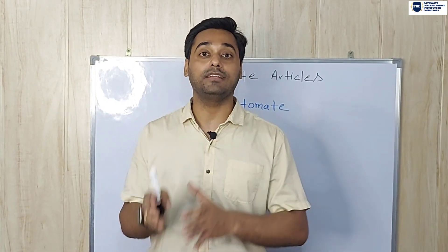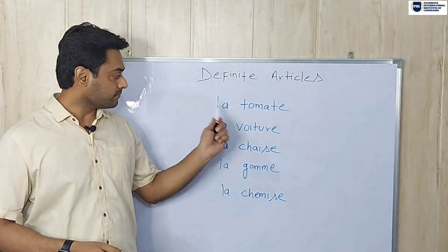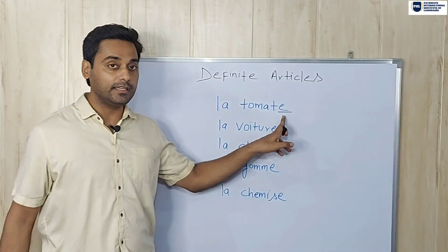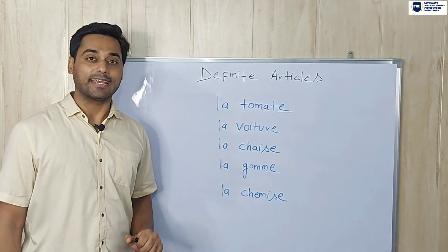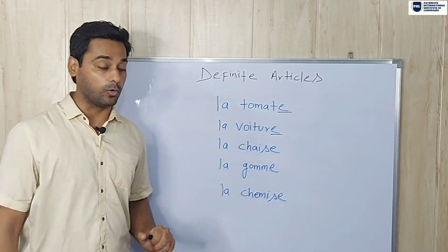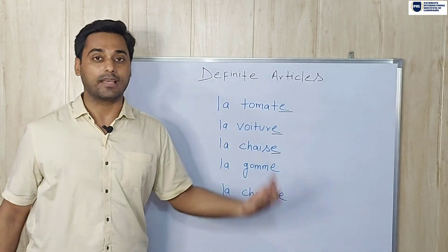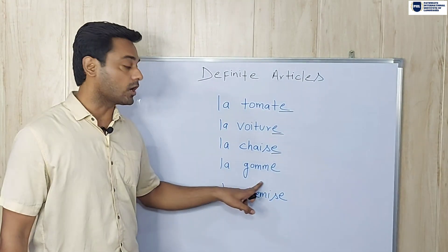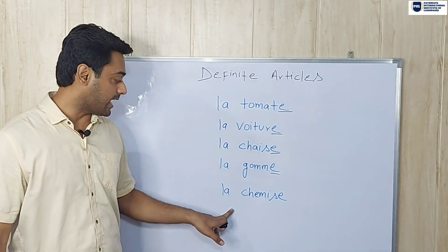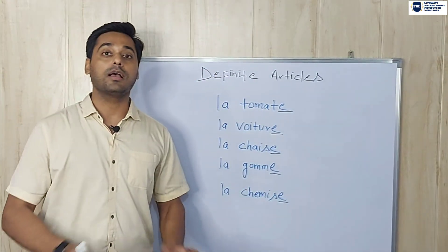For example, if any noun ends with 'e', we consider it feminine. Look at these words: 'la tomate' (the tomato) — ends with 'e', feminine. 'La voiture' (the car) — ends with 'e', feminine. 'La chaise' (the chair) — ends with 'e', feminine. 'La gomme' (the eraser) — ends with 'e', feminine. 'La chemise' (the shirt) — ends with 'e', also feminine. So checking the ending is one way to figure out gender.